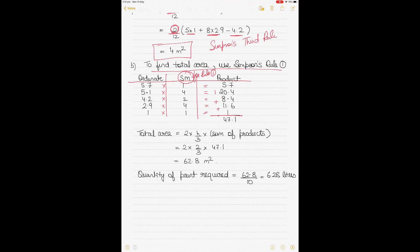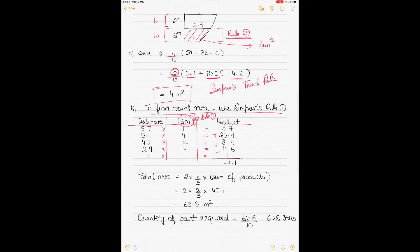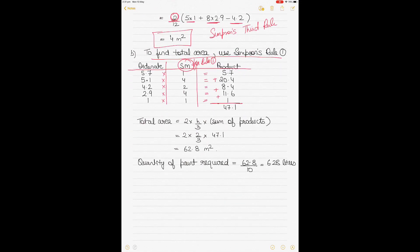If the total area is 62.8 square meters and one liter of paint covers 10 square meters, simply divide 62.8 by 10 to get the total quantity of paint required, which is 6.28 liters.